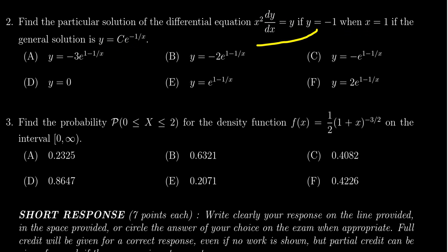It comes down to plugging these numbers into the general solution and finding the unknown value c. If y equals negative one, we get negative one equals c times e to the negative one over x, which is one. Simplifying the right hand side, you get c times e to the negative one.